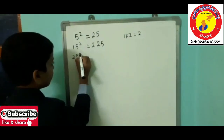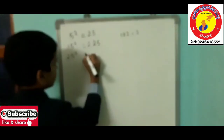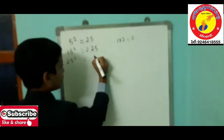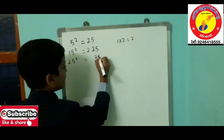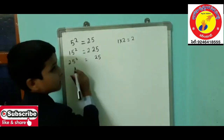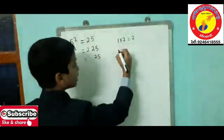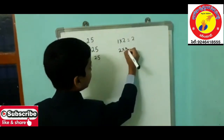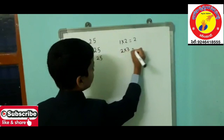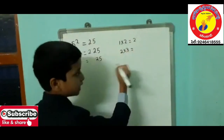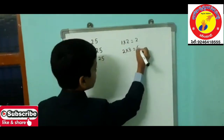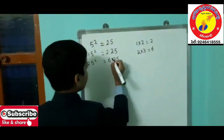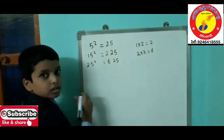For 25 squared: 5 squared is 25, and the tens digit is 2. The next number after 2 is 3, so we multiply these both numbers — 2 times 3 is 6. Therefore 625 is the square of 25.